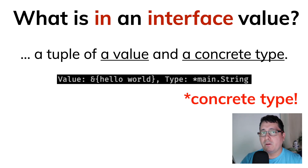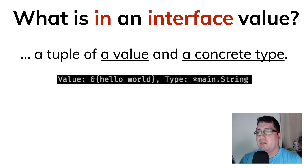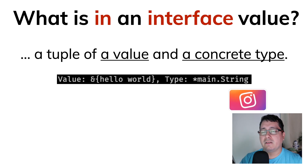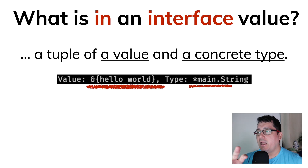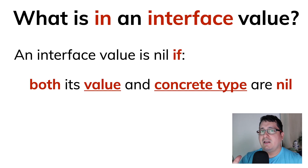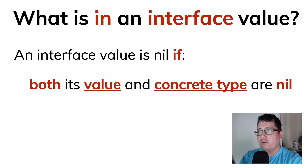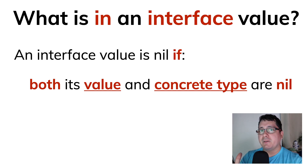In the example we had before, we had a struct type called string with a field called value, and an exported field that happened to have the value 'hello world'. The type in this case will be a pointer to a string belonging to the main package. So the value and concrete type are both present. In order for an interface value to be considered nil, both of those things have to be nil.